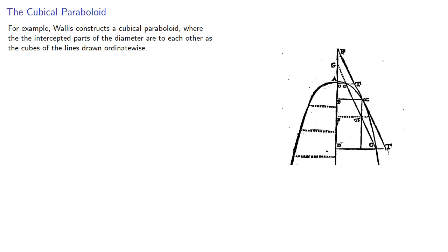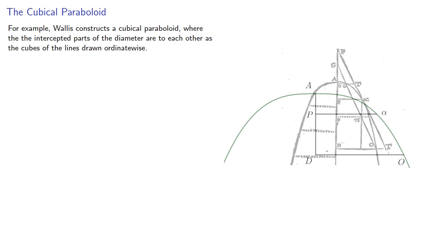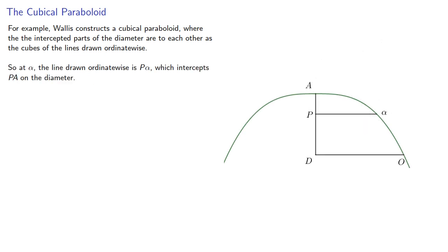Now Wallace's figure is not very readable, so we'll redraw it with the important components. So if at some point on the curve alpha the line drawn ordinate-wise is P alpha, which intercepts PA on the diameter,